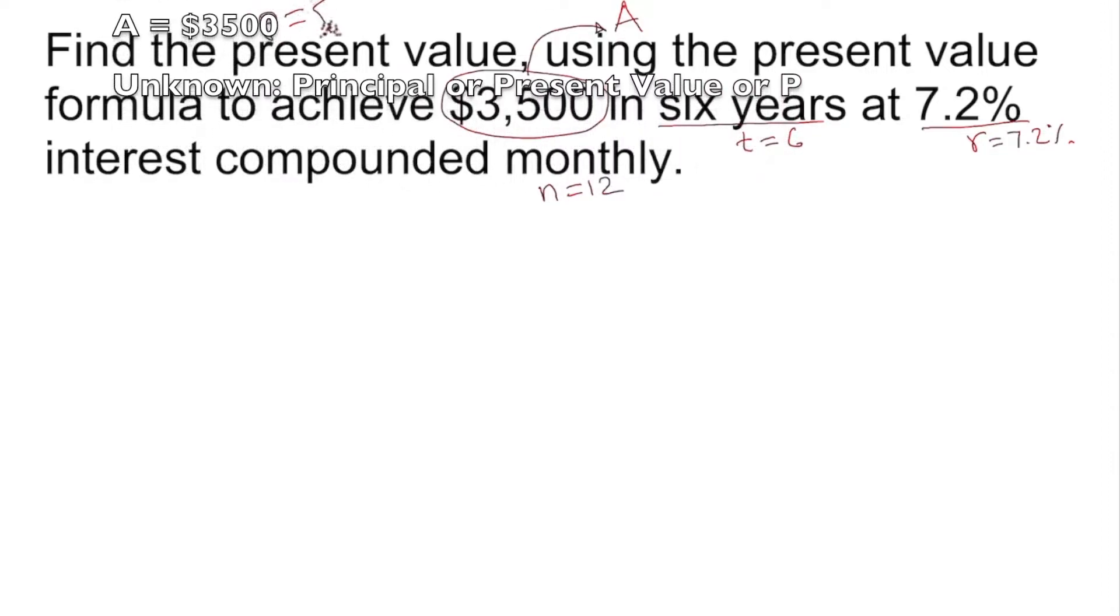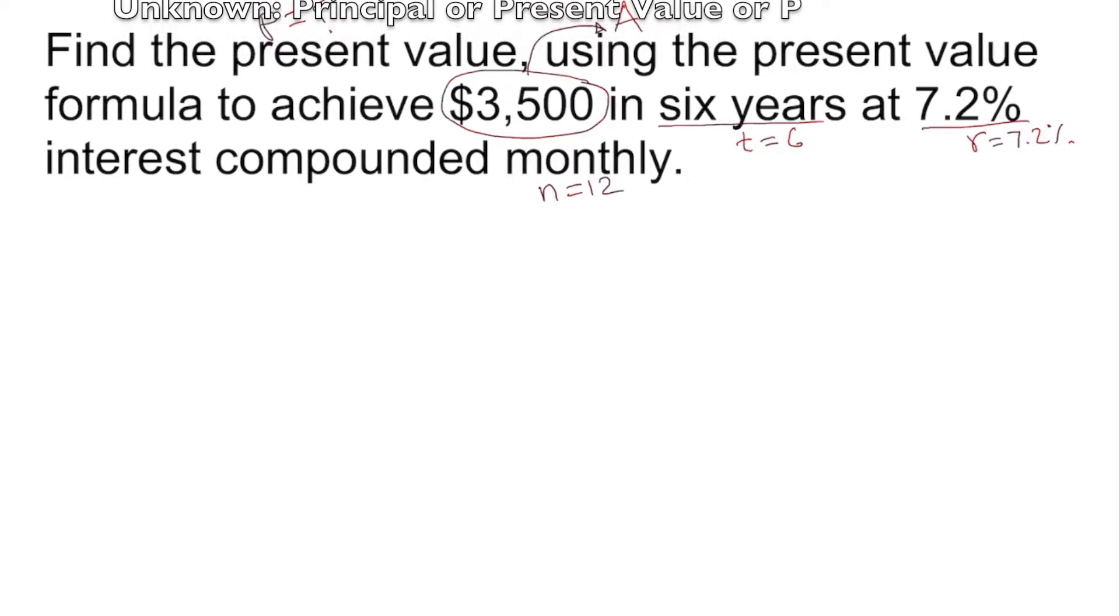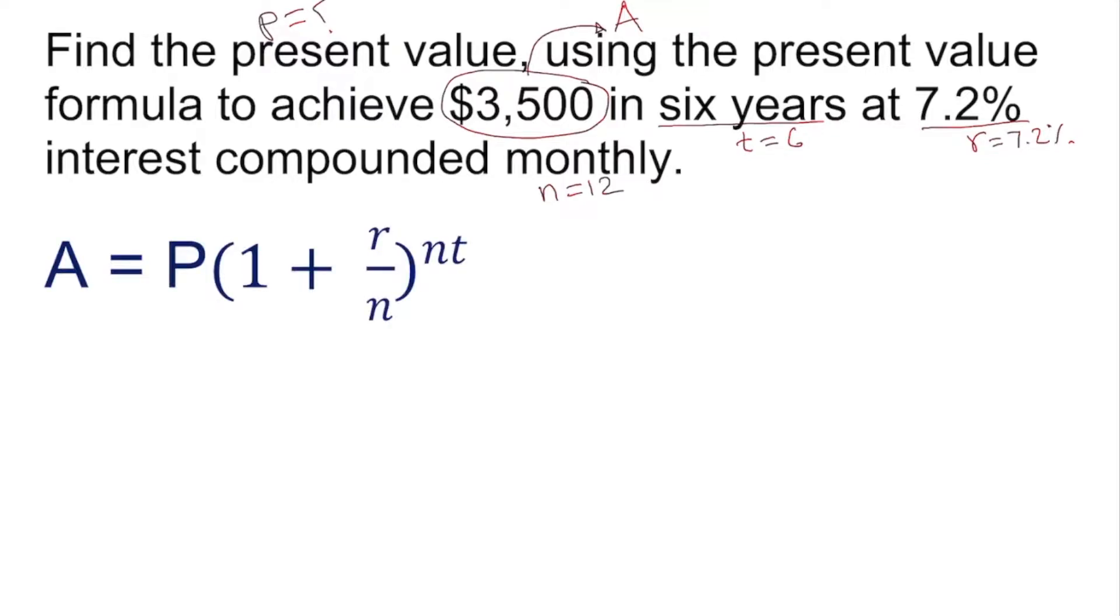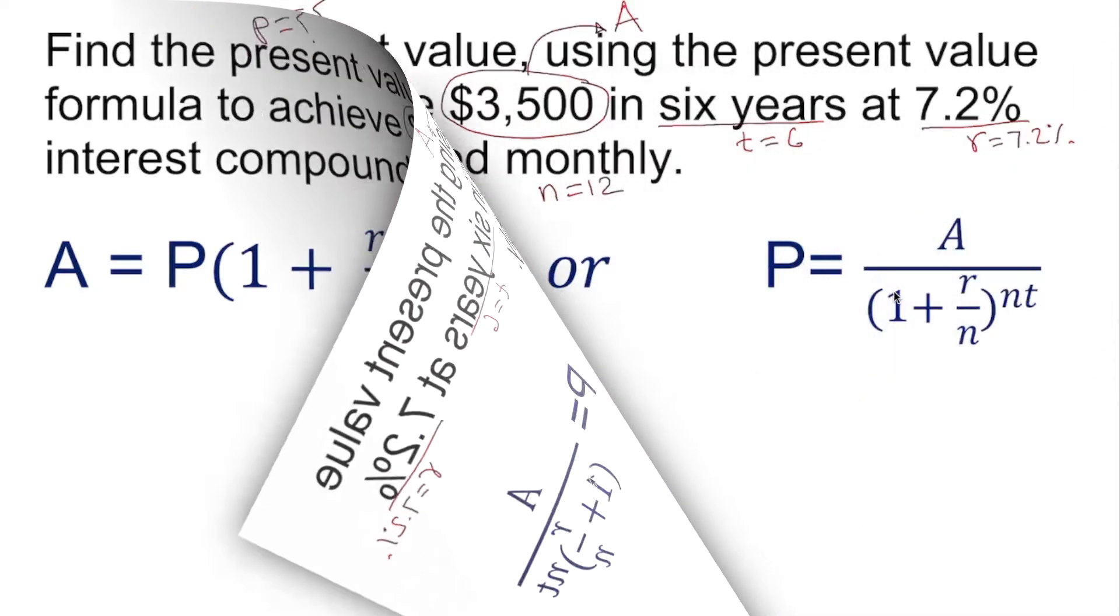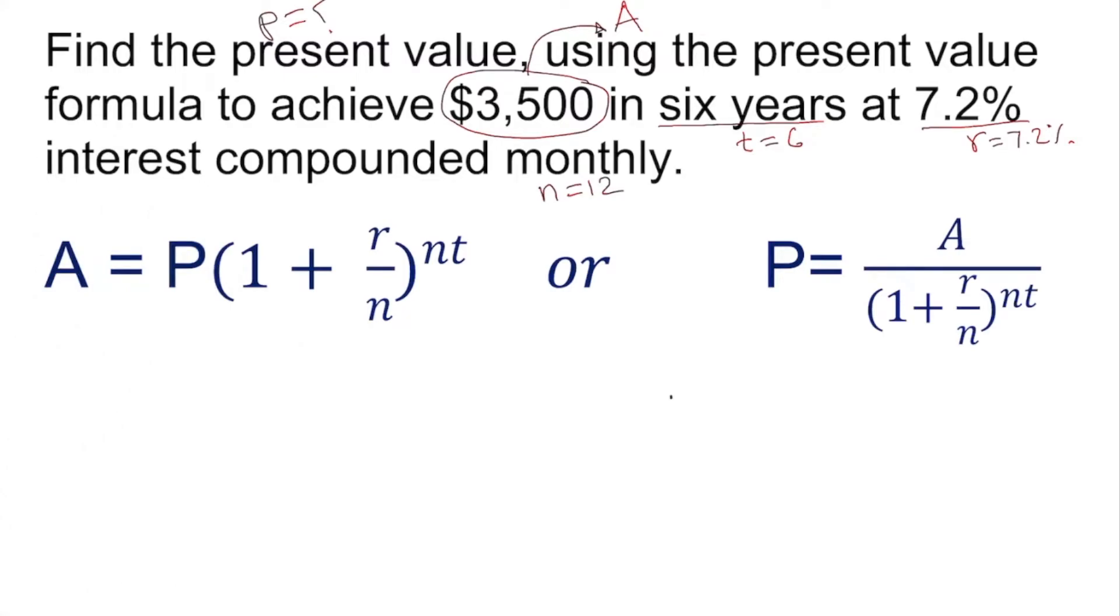If we know the present value formula, we can work it out. Or we can work it out from the compound interest formula. We plug everything in, only P is not given. But if you know how to isolate P by itself, that would be beautiful - we just plug this in and it's going to give the answer straightforward. I'm going to look at the right side first.